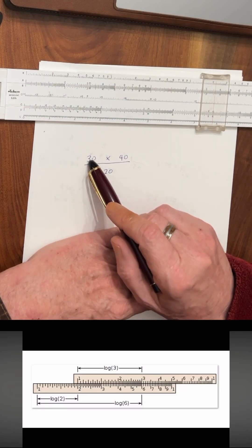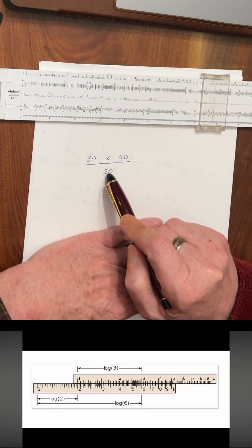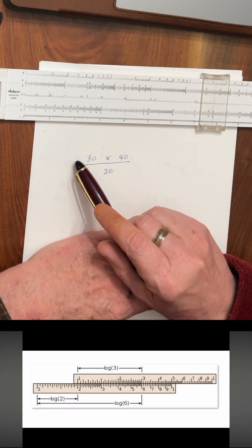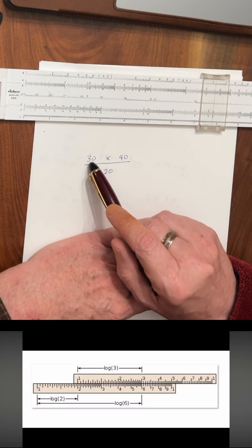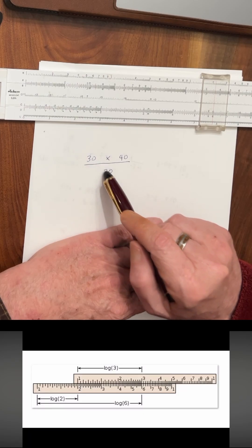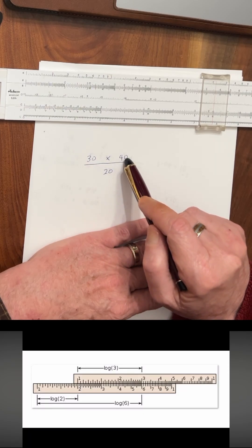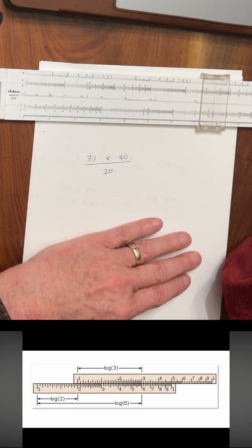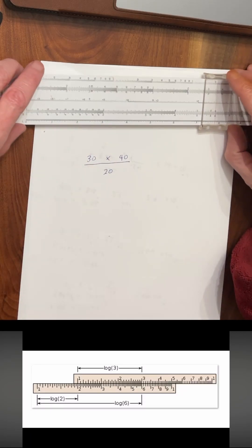Do we multiply 30 by 40 and then divide by 20? Do we divide 1 by 20, then multiply it by 30 and then by 40? Or do we start at 30, divide by 20, and then multiply by 40? Let's look at the number of movements that we have to make each way.